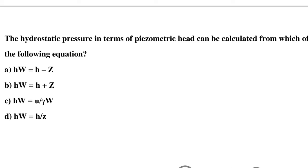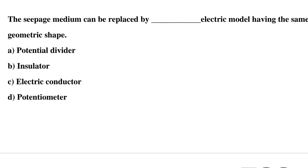Question 5: The hydrostatic pressure in terms of piezometric head can be calculated from which of the following equations? Option A: HW = H − Z, Option B: HW = H + Z, Option C: HW = U / γW, Option D: HW = H / Z. The correct answer is Option A: HW = H − Z.